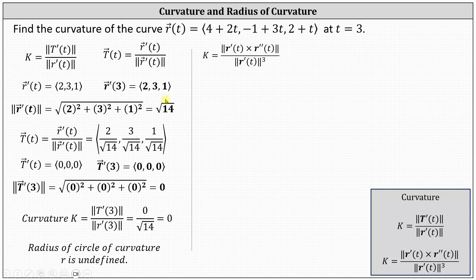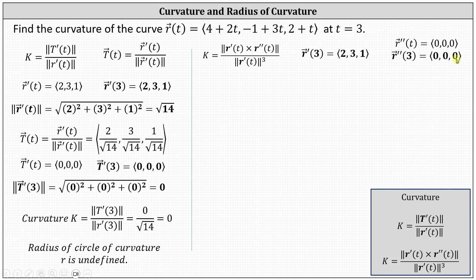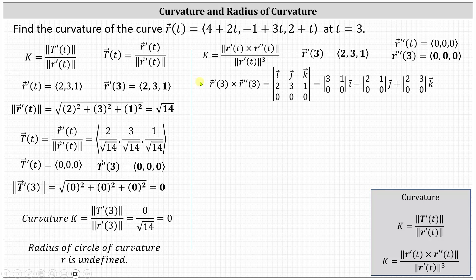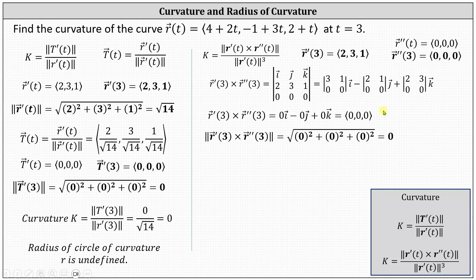We already found r prime of 3, which is the constant vector ⟨2, 3, 1⟩. To find r double prime of t, we differentiate r prime of t, but because r prime of t is the constant vector ⟨2, 3, 1⟩, r double prime of t equals the zero vector, and so does r double prime of 3. Now we need to find the cross product of r prime of 3 and r double prime of 3 using a 3 by 3 determinant, where the first row is i, j, k; the second row is r prime of 3; and the third row is r double prime of 3. Expanding the determinant, each of the 2 by 2 determinants is equal to zero, indicating the cross product equals the zero vector, and its magnitude is zero — once again indicating the numerator is zero.